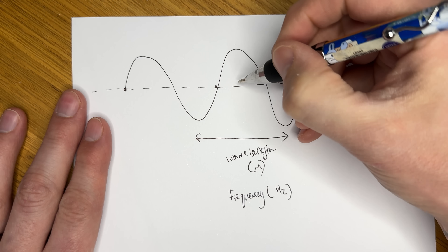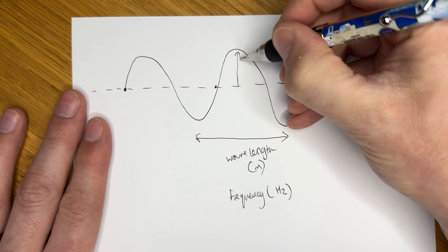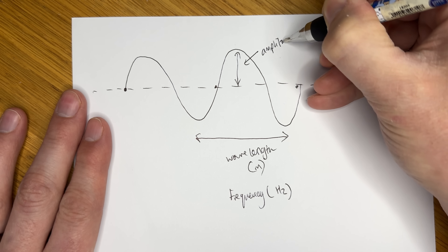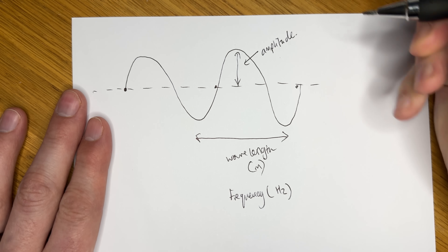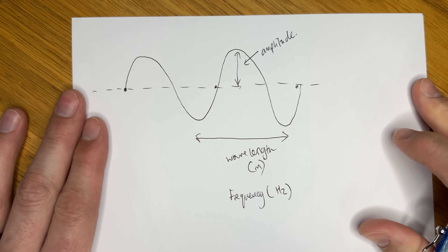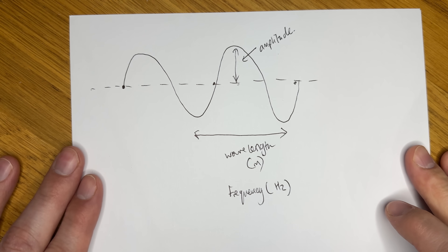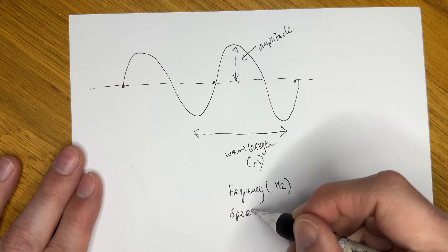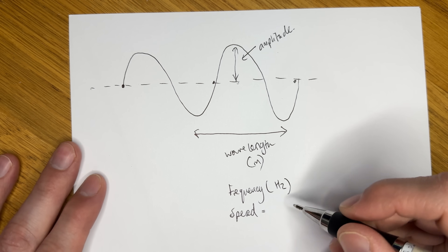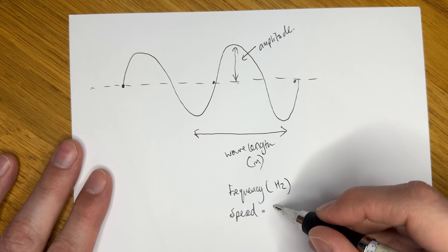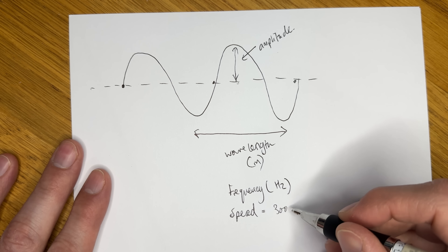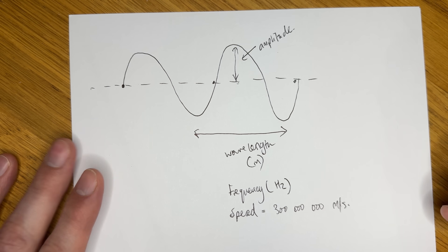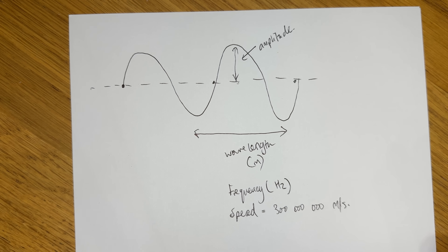The amplitude of the wave is the maximum disturbance of the wave from the central position. And, of course, waves have a speed. In the case of all light, this speed is the speed of light. In a vacuum, that speed is almost 300 million metres per second, as stated earlier.